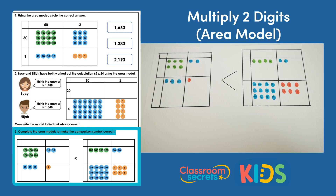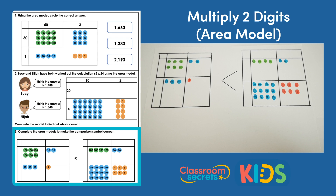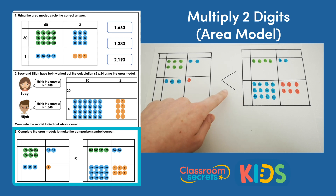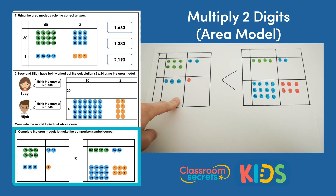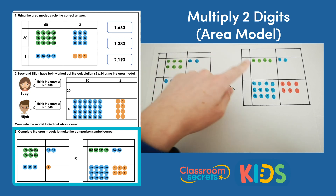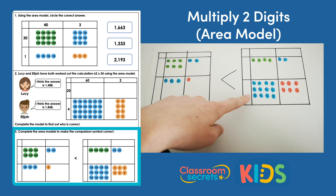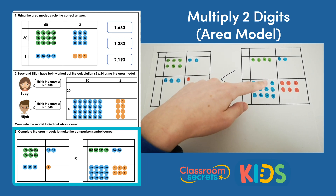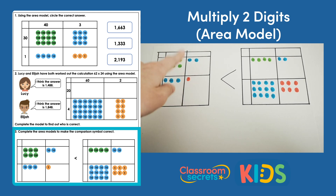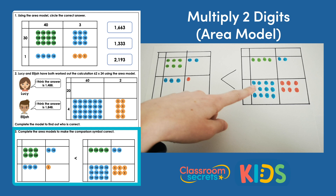Question 3 says: complete the area models to make the comparison symbol correct. We know the area models are incomplete because there are no numbers around the outside to show the numbers that have been partitioned and then multiplied. The comparison symbol suggests the left area model should be bigger than the right, but the left has 600s and the right has 400s, and adding the smaller values doesn't make the right side greater. We need it to be the other way around.